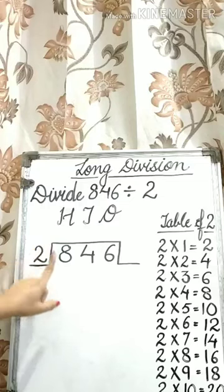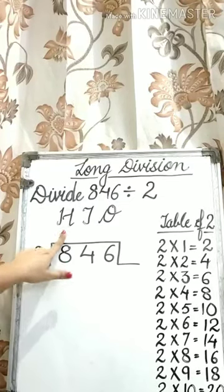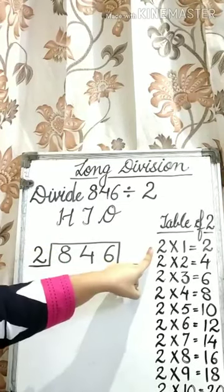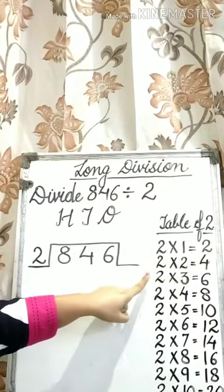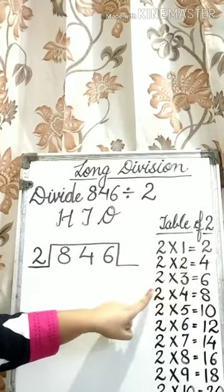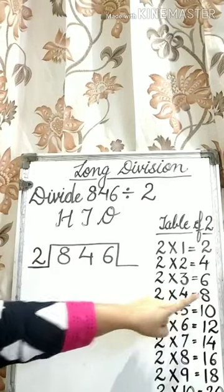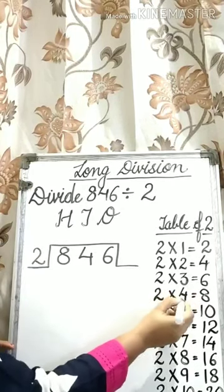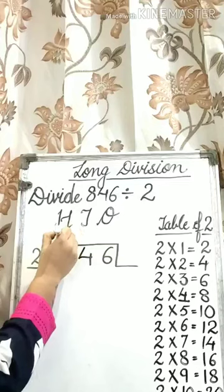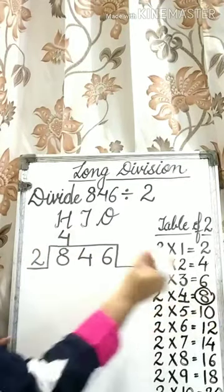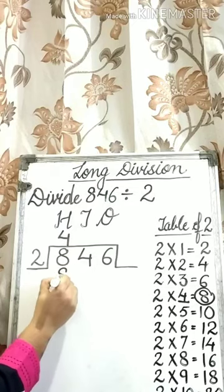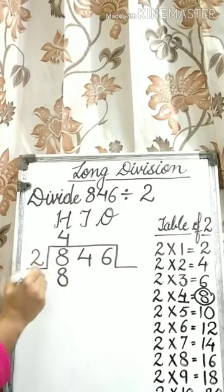So first of all we need to divide 8 hundreds by 2. 2 ones are 2, 2 twos are 4, 2 threes are 6, 2 fours are 8. So write 4 in the hundreds column of the quotient and 8 under the dividend in the hundreds column.